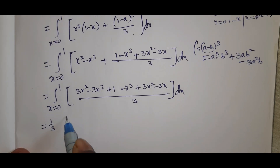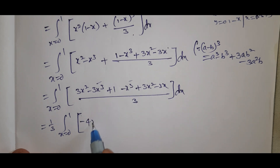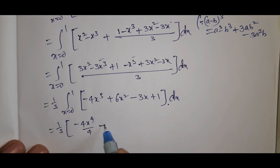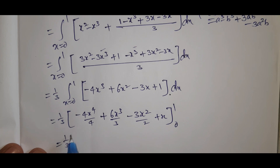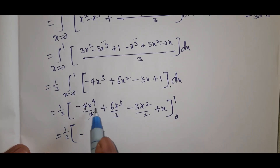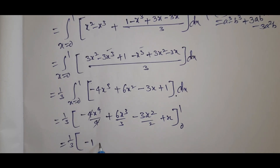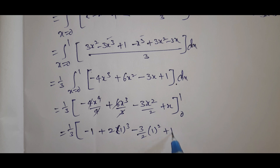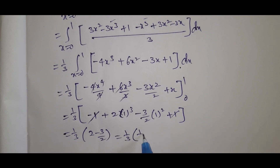That equals (1/3) times the integral from 0 to 1 of (−4x³ + 6x² − 3x + 1) dx. Integrating: (1/3)[−4x⁴/4 + 6x³/3 − 3x²/2 + x] from 0 to 1. Applying the upper limit (x = 1): (1/3)[−1 + 2 − 3/2 + 1] = (1/3)(1/2) = 1/6. The lower limit gives 0. So the answer is 1/6.